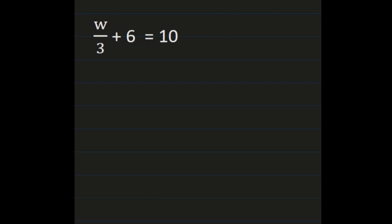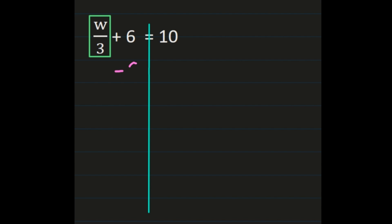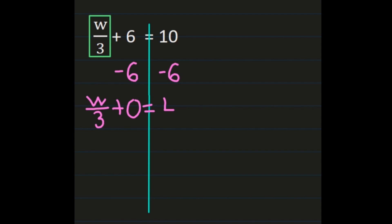For our next example we have w over 3 plus 6 equals 10. We ultimately want to isolate w, but right now it's with the 3 — it's w divided by 3. We box w over 3 first because we need to get that alone. To do that we subtract 6 from both sides, since we have w over 3 plus 6. So w over 3 plus 6 minus 6 is 0, and 10 minus 6 is 4, giving us w over 3 equals 4.